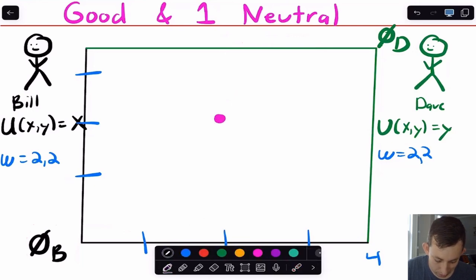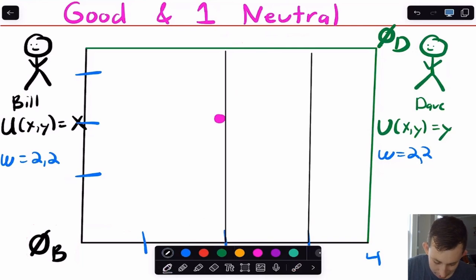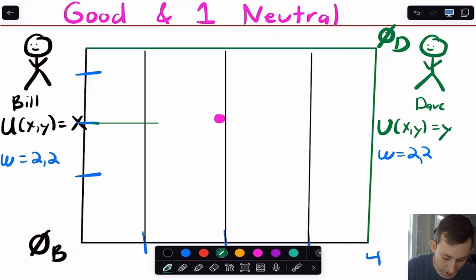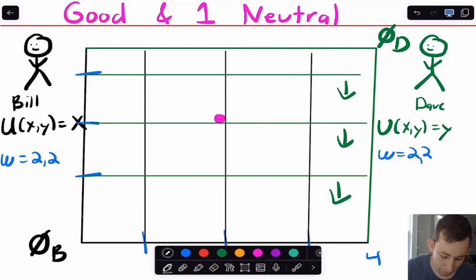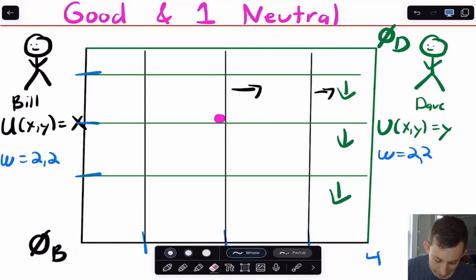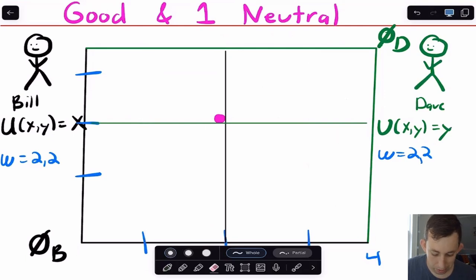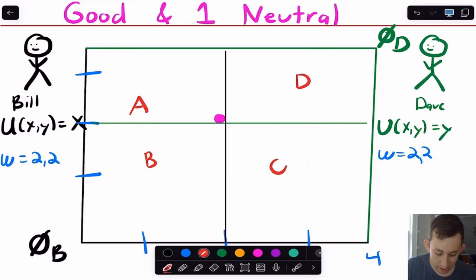Our endowment point of 2,2 is right here, where Dave has two going this way and two going this way, and Bill has two going this way and two going this way. If Bill just likes X, his indifference curves are straight vertical lines — he doesn't care how much Y he has. For Dave, who only cares about Y, the indifference curves are straight horizontal lines, and Dave's utility is increasing upward. Bill's utility is increasing to the right. I'll remove the extra indifference curves and keep only the ones through the endowment.